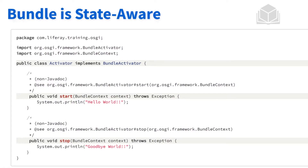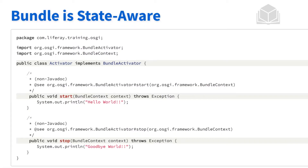A bundle is state aware — it has a number of different states that it can traverse through. In traditional OSGI, we can use a bundle activator, which is an API that can be used to control the different lifecycle states of a bundle. In Liferay, we do not use the bundle activator, but to get an idea of how this works, we're going to take a look at it. Within the activator class implementing the bundle activator, we have a start method and a stop method that help control the lifecycle of a module, and as those methods are called, they print something in the console.